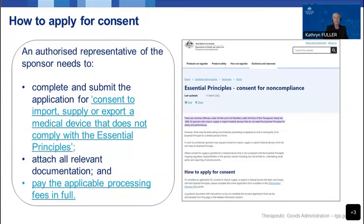If you're seeking consent for non-compliant devices, an authorised representative of the sponsor will need to complete and submit the consent application form, which is hosted on the TGA Business Services site. A link to this can be found on the TGA's Essential Principles Consent for Non-compliance webpage, which also provides a copy of the guidance document on how to complete the application form. In the application, you'll need to upload all relevant documentation such as the risk mitigation strategy and implementation plan, and pay the applicable processing fees. The delegate of the Secretary will take all relevant information into consideration when determining whether to grant consent, and a notification will then be sent to the sponsor advising them of the outcome.